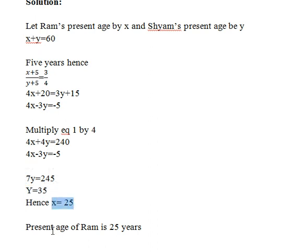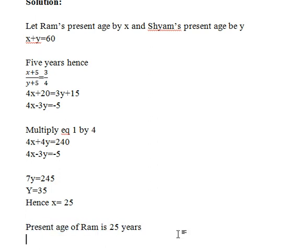Putting Y equals 35 into equation 1 gives X equals 25. Since Ram's age was assumed as X, Ram's present age is 25 years.